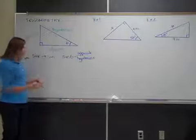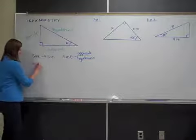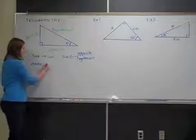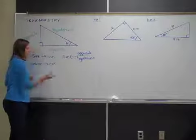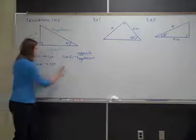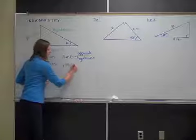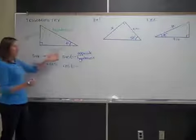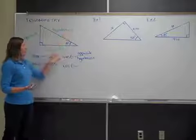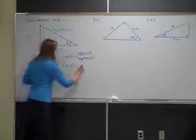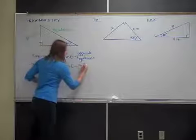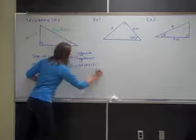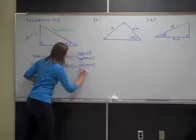The cosine is the next trig ratio, abbreviated COS. The cosine equation is: the cosine of theta equals the ratio of the adjacent side to the hypotenuse. So adjacent is on the top and hypotenuse is on the bottom in the denominator.